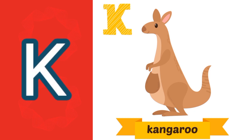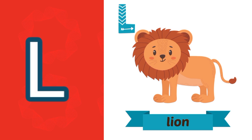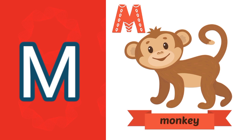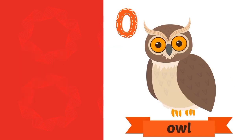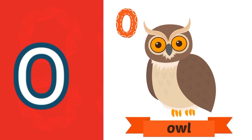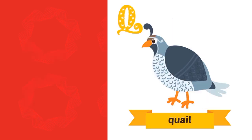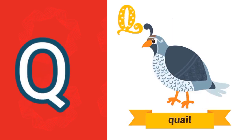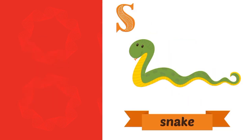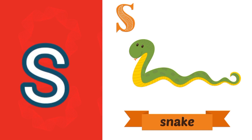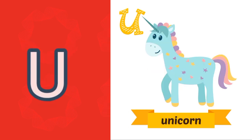K sound — kangaroo. L sound, L — lion. M sound, M — monkey. N sound, N — novel. O sound, O — owl. P sound, K — penguin. Q sound, KW — quail. R sound, R — rat. S sound, S — snake. T sound — turtle. U sound —